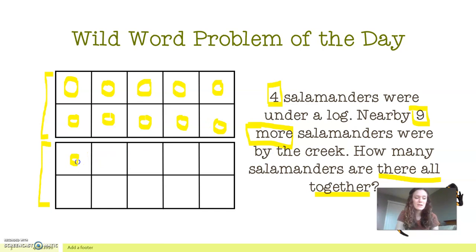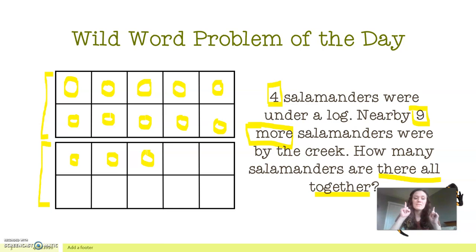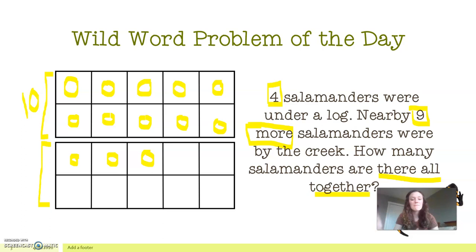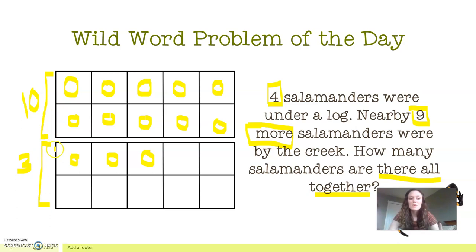There are a few ways we can solve this problem using our 10-frames. The first way is to subitize — which is to look with our eyes and know what number that is. Without even counting, we know a full 10-frame is 10, so we know there are 10 salamanders for sure. Then we can use the strategy called counting up — starting at 10 and counting up from there: 10, 11, 12, 13. We can see there are three down here, so using subitize we know 10 up top, and counting on three more gives us 13 salamanders.